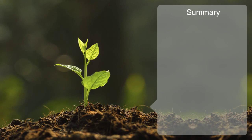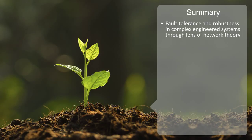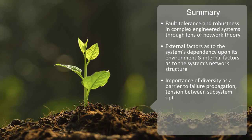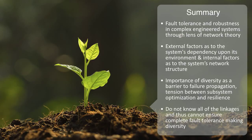In this video, we've been looking at the nature of fault tolerance and robustness in complex engineered systems through the lens of network theory. We've talked about how systems robustness is a product of both external factors — as to the system's dependency upon its environment — and internal factors, as to the system's network structure, its overall degree of connectivity, and its dependency upon centralized hubs and critical bridging links. We briefly mentioned the importance of diversity as a barrier to failure propagation, looking at the tension between subsystem optimization and resilience. Finally, we talked about the fact that we often do not know all the linkages within these complex distributed networks, and thus can't ensure complete fault tolerance, making inherent diversity an important security strategy. Thank you.